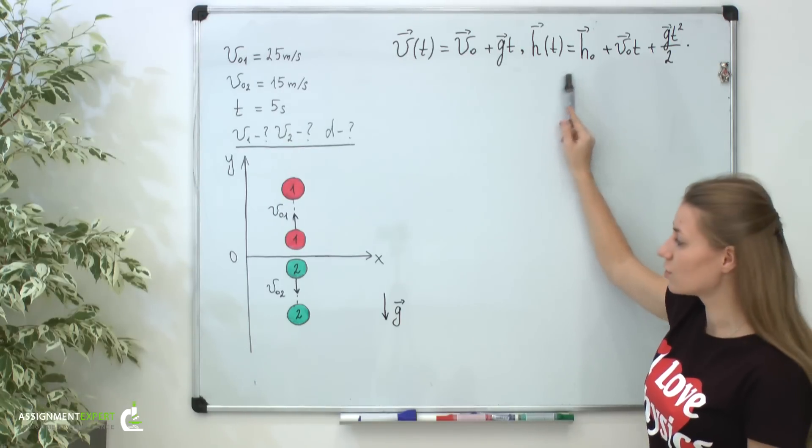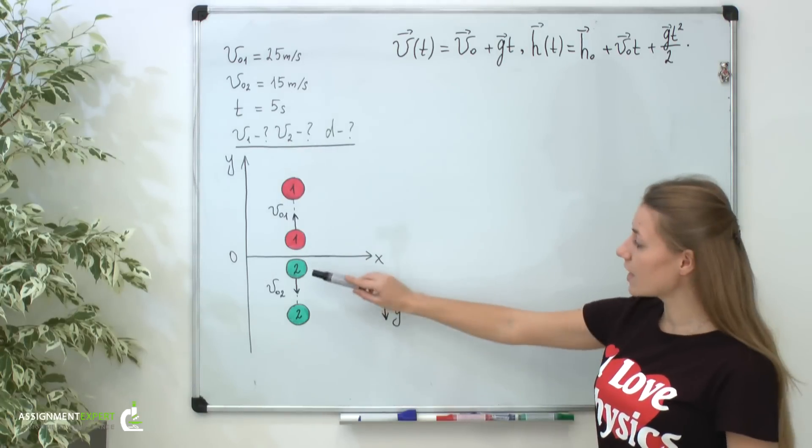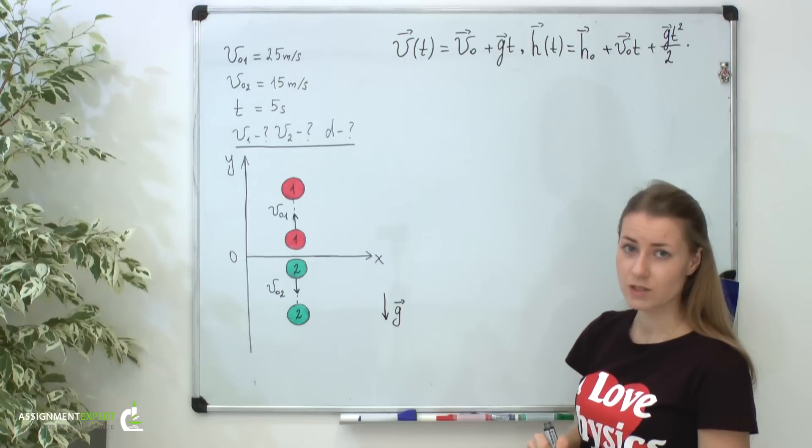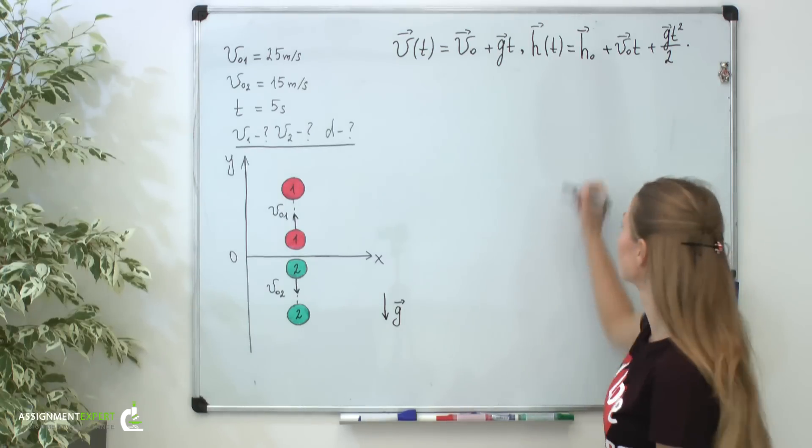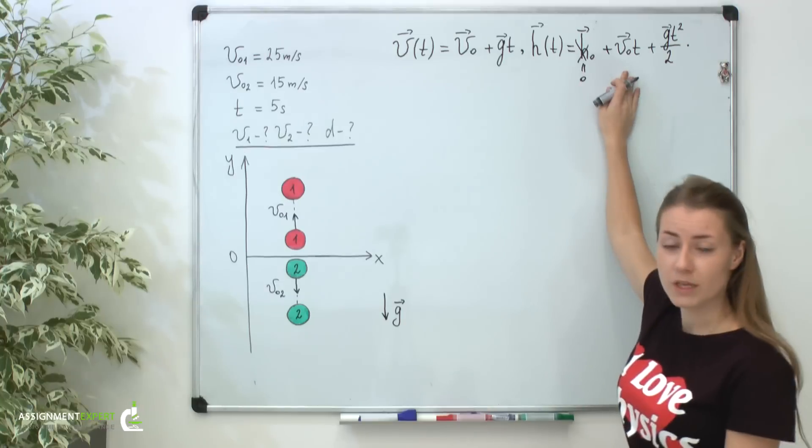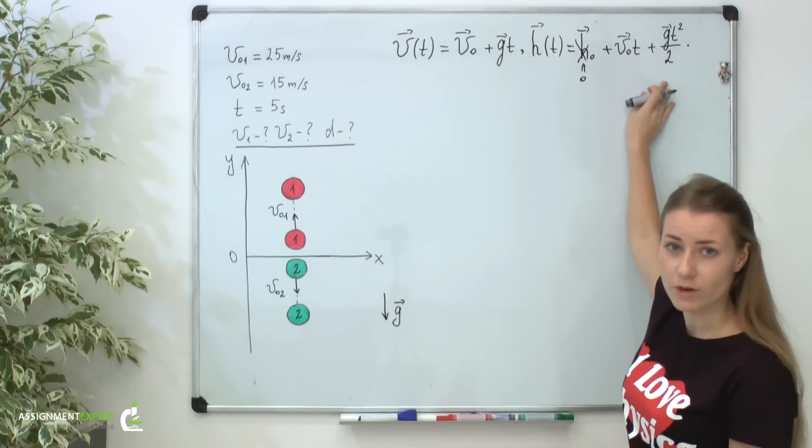The second equation consists of three terms. The first term is initial distance from the starting point. As you can see, in our case, this initial distance is zero. So let's keep it in mind and don't write this term anymore. The second term is a linear contribution to the distance, and the third is accelerated part.